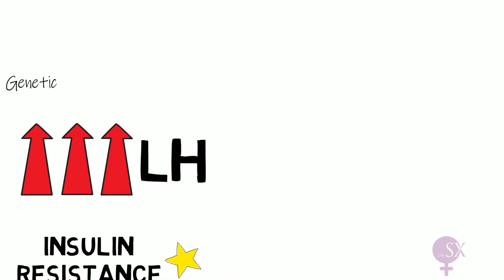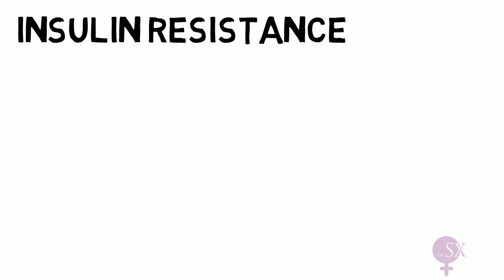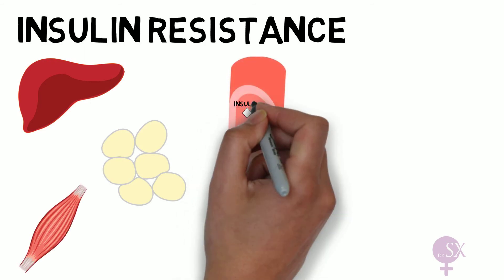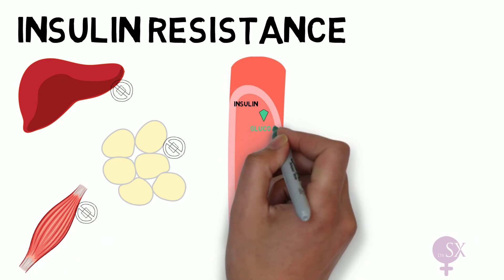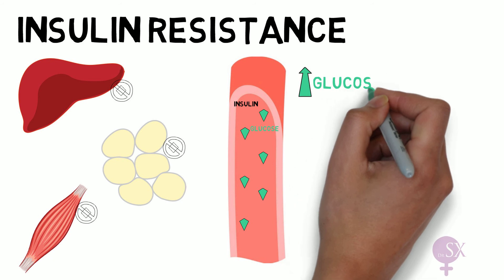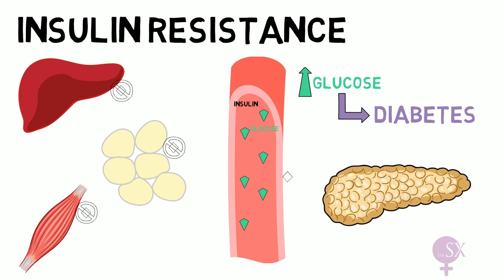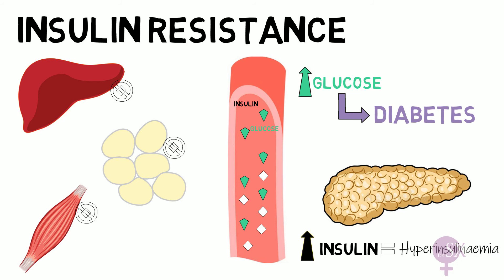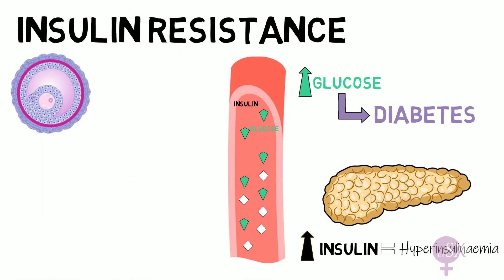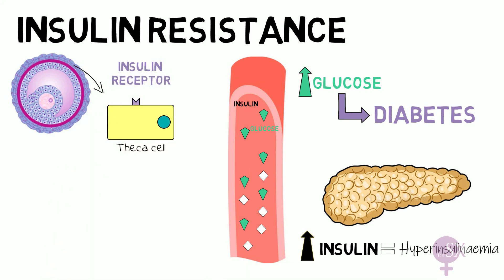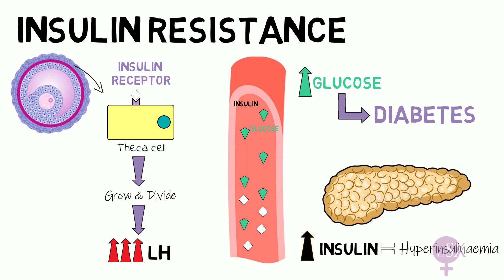Next, insulin resistance: this is when cells in the liver, adipose tissue, and muscle become insensitive to insulin and do not take up glucose from the bloodstream, which can develop into diabetes. As a result of high glucose levels, the pancreas secretes more and more insulin, which may cause some people to develop hyperinsulinemia. The theca cells also have insulin receptors, so insulin binds to them causing them to grow and divide. With more theca cells, there are more LH receptors, and it is thought that this in turn stimulates GnRH pulses in the hypothalamus for further secretion of LH.